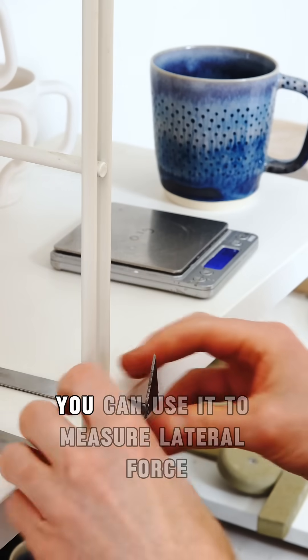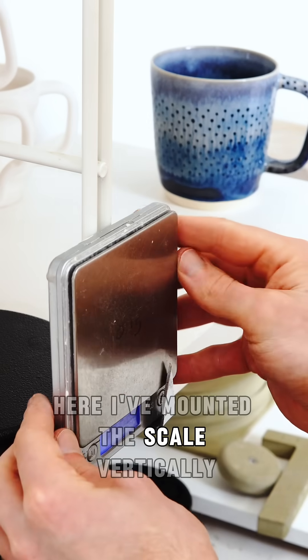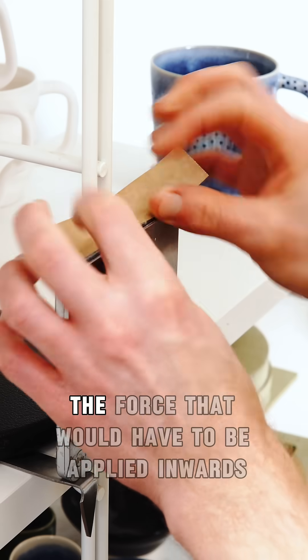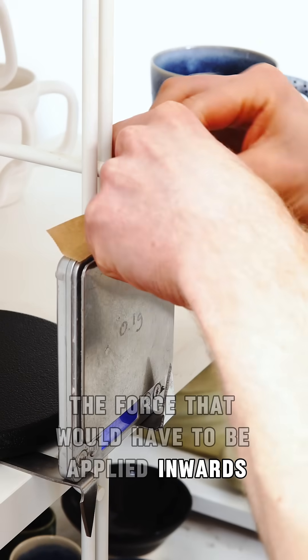By turning a scale on its side you can use it to measure lateral force. Here I've mounted the scale vertically and I'm using it to measure the force that would have to be applied inwards to keep a mug level.